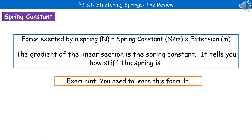The last thing we need to do is carry out a calculation using the spring constant. This is a formula you'll have to learn for the exam — it's not on the data sheet, so it's one to memorise. The force exerted by a spring in Newtons equals the spring constant times the extension in metres. Do be careful, because they quite often give you the extension in centimetres, so remember to check the units and convert where needed. If you need to work out the spring constant from a graph, it's just the gradient of the linear section. The spring constant tells us how stiff the spring actually is.